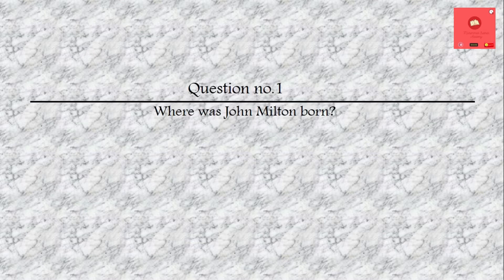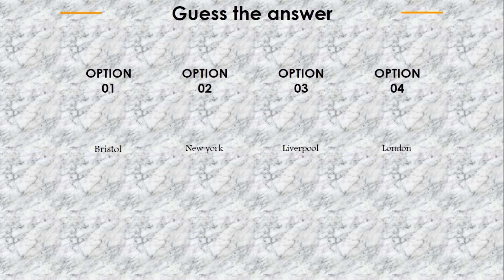My first question is: where was John Milton born? The options are: Bristol, New York, Liverpool, or London. The answer is London.